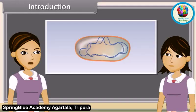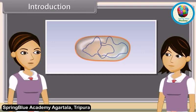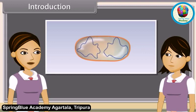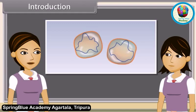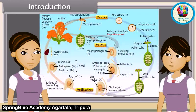As we have already discussed, reproduction is the ability of all organisms to produce young ones similar to themselves in most characters. The process which involves fusion of male and female gametes to form a new individual is known as sexual reproduction.